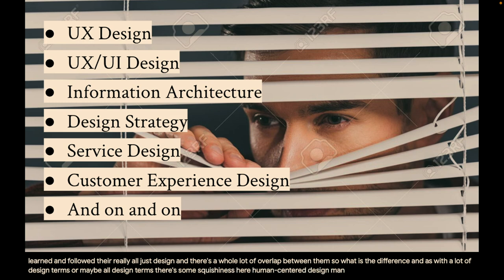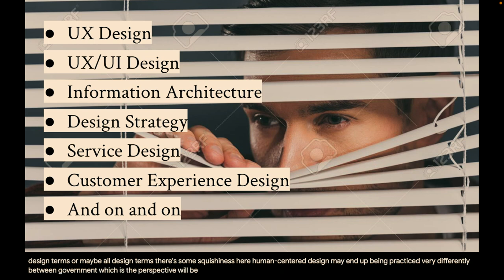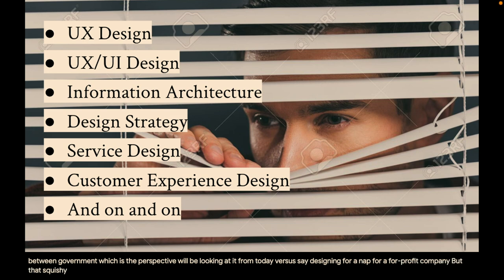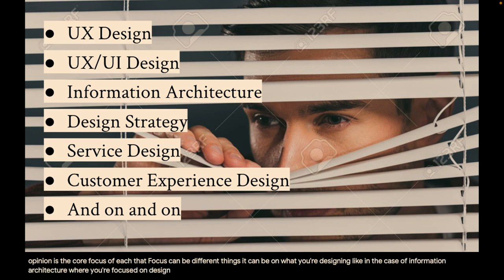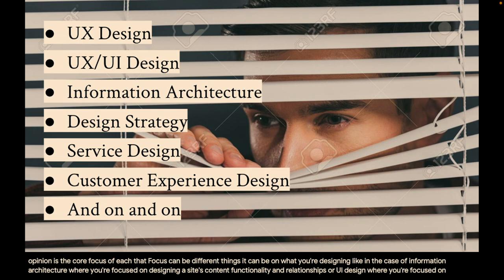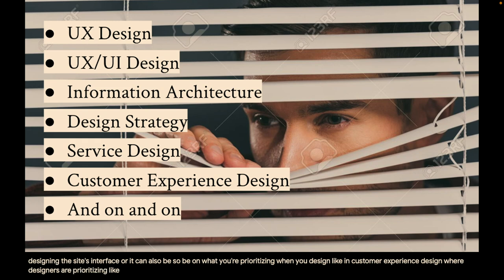Human-centered design may end up being practiced very differently between government — which is the perspective we'll be looking at it from today — versus designing for an app for a for-profit company. But the difference between these different types of design, the only rigid real difference in my opinion, is the core focus of each. That focus can be on what you're designing, like information architecture where you're focused on designing a site's content, functionality, and relationships, or UI design where you're focused on designing the site's interface. Or it can be what you're prioritizing when you design, like in customer experience design, where designers are prioritizing optimizing the customer journey before, during, and after they engage with your site.